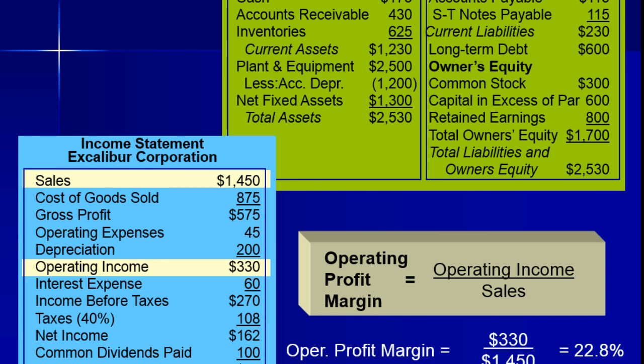Sometimes some teams over-invest in advertisements and they don't build enough cars. They develop terrific demand — say a demand of 7,000 or 8,000 vehicles — but they only built 4,000 vehicles. So they spent all this money advertising and increased the demand, but they didn't get to fulfill it. These are just management problems.